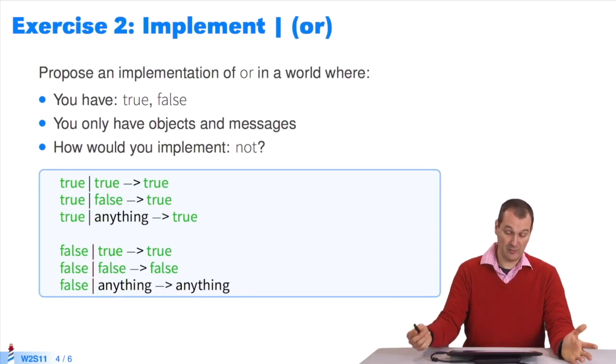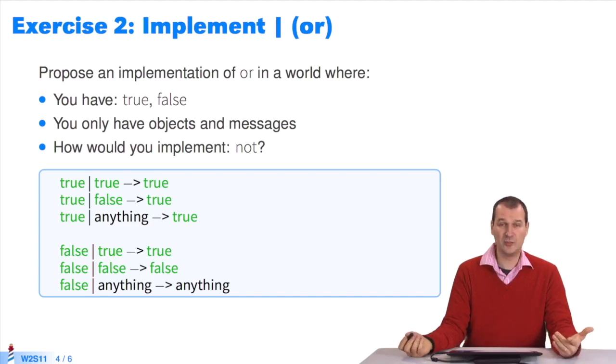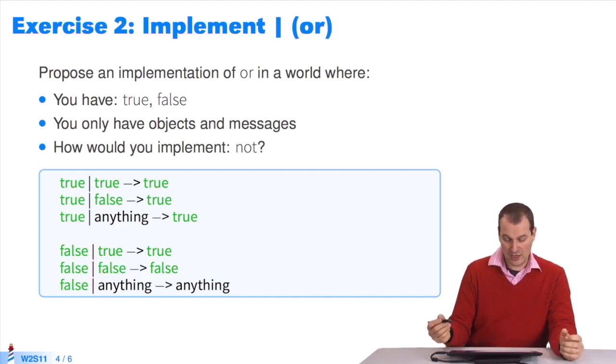The second question is about OR. OR in Pharo is a pipe. We took examples from the Pharo implementation. Don't cheat. Do it without checking how it's implemented. Once again, you have booleans TRUE and FALSE. You have objects and messages.